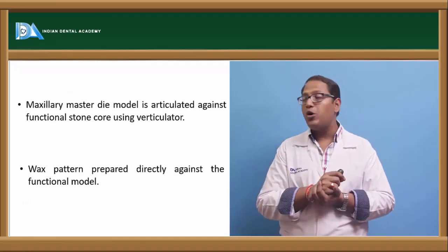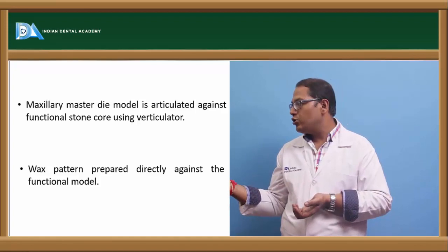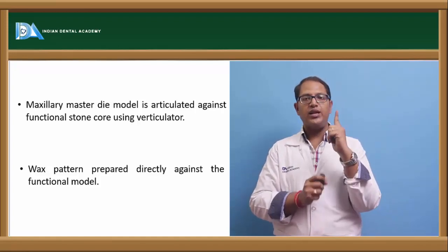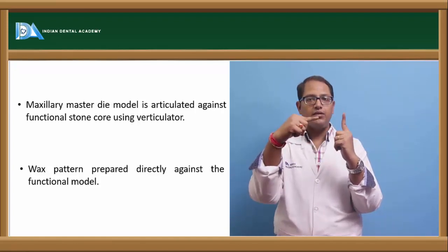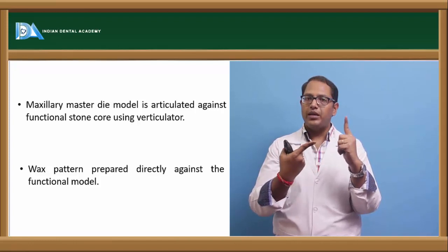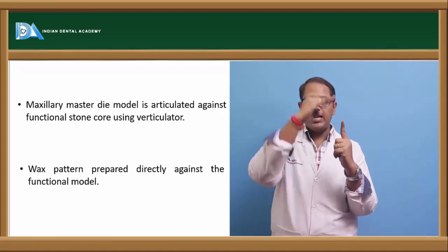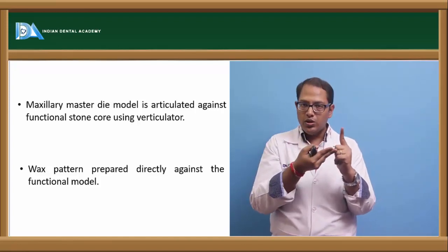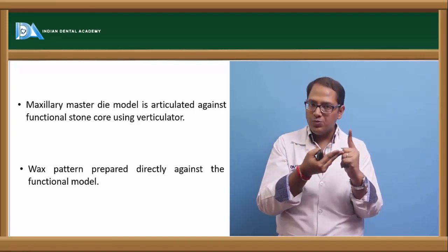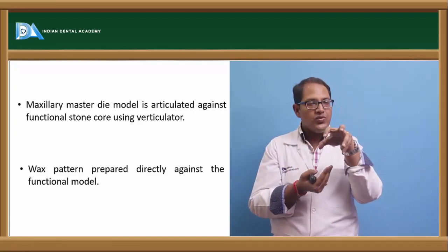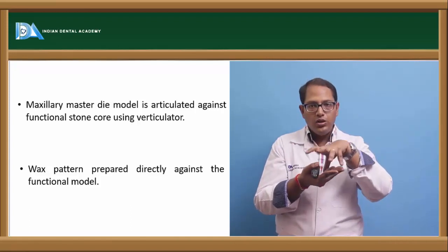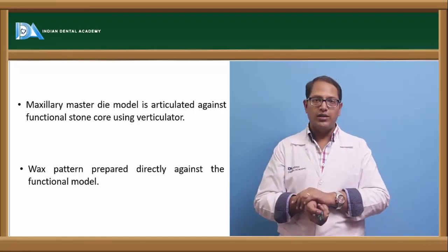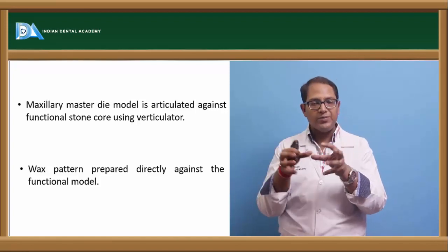The maxillary master die model is then articulated against the functional stone core using a verticulator. The verticulator is like a straight rod with an upper and lower member; the only movement possible is up and down. You place the maxillary cast onto the stone core and mount it. The wax pattern is then prepared directly against the functional model — the wax pattern is prepared on the functionally generated wax intraoral record material that was taken.